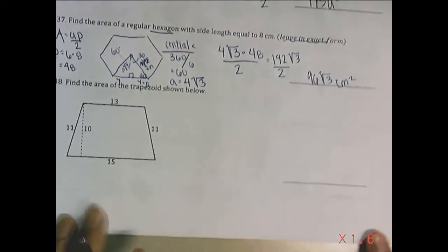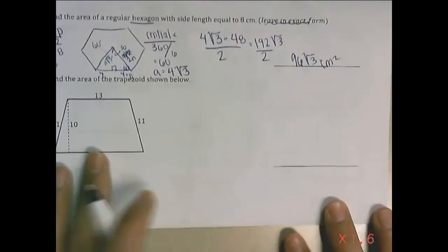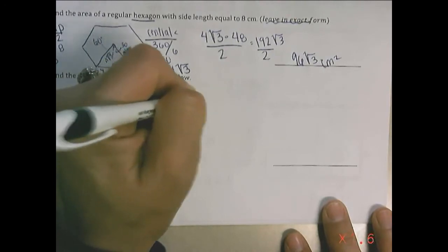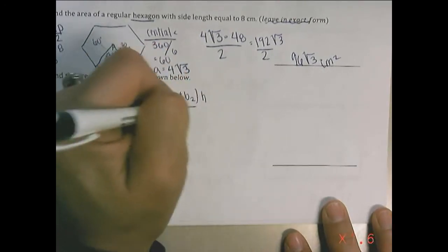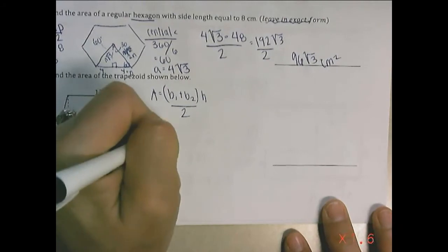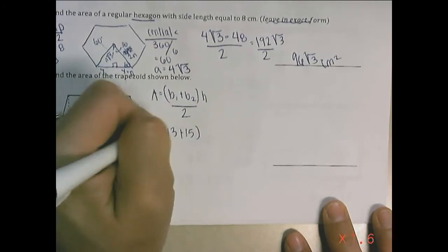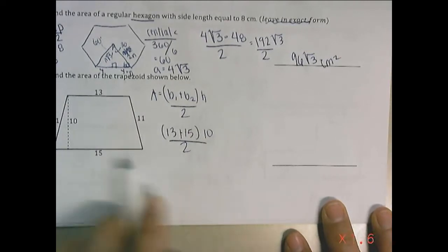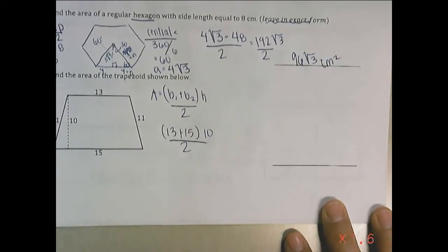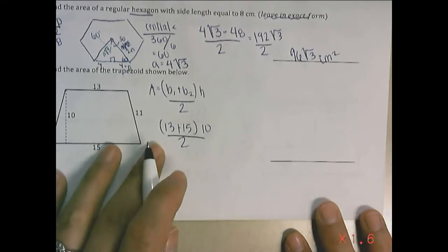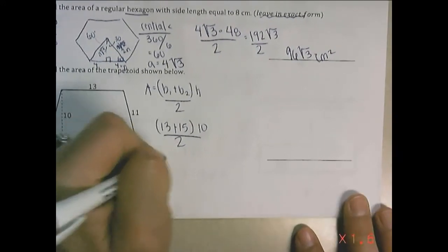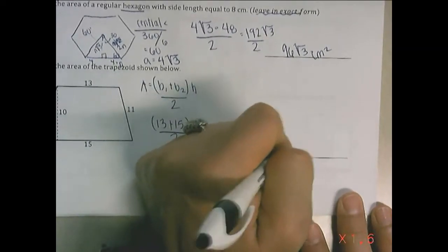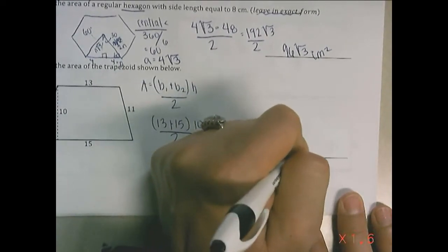Now it's a trapezoid. Area equals (b1 plus b2) times height divided by 2. With bases 13 and 15 and height 10: (13 plus 15) times 10 divided by 2 equals 280 divided by 2, which is 140 units squared.